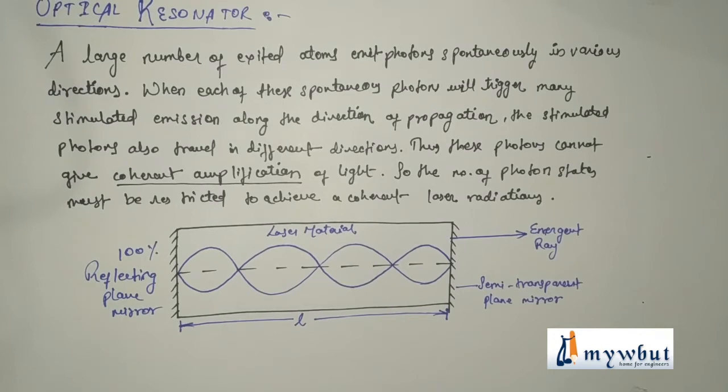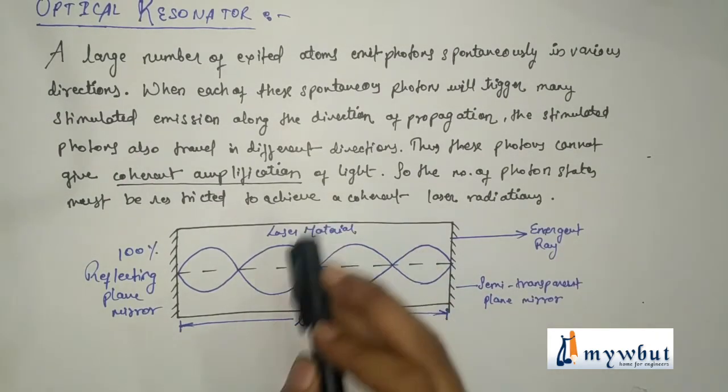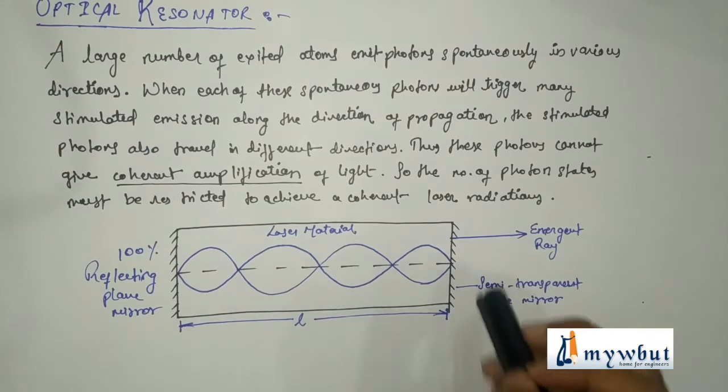How can we define an optical resonator? An optical resonator formed by two mirrors at the two ends of a laser material is a device that directs the photons back and forth through the laser medium and the number of photons get multiplied by stimulated emission to achieve a coherent laser radiation. So this is the basic definition of an optical resonator and this is the basic diagram.